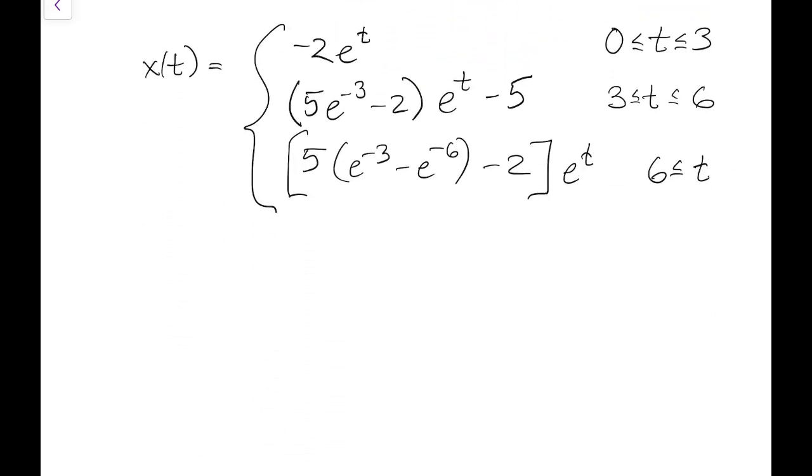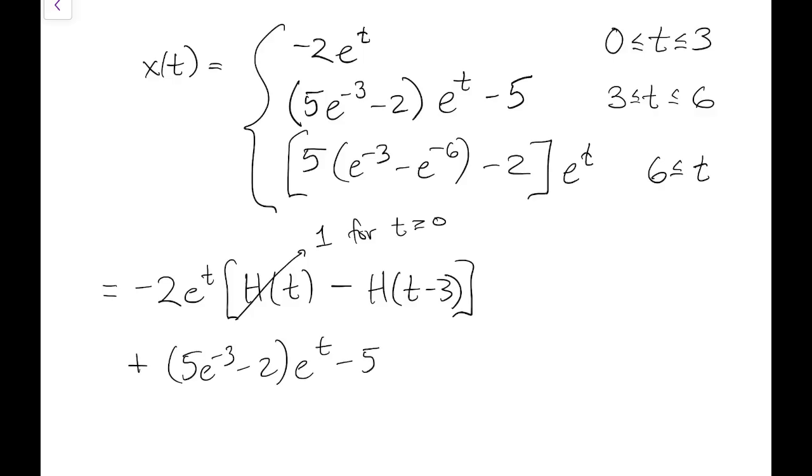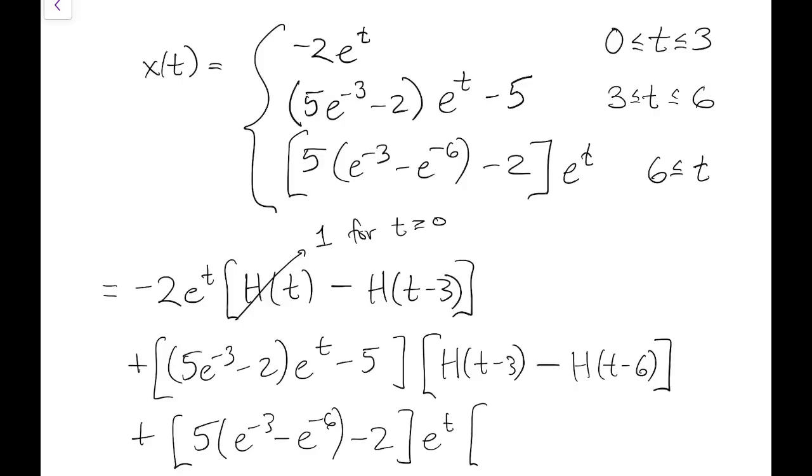We can also write the solution we found using these window functions. So the first piece is valid in the window from time 0 to 3. And of course, since all the times are greater than 0 anyway, we might as well just write 1 here for the Heaviside H of t. And then the second function definition is valid over the second window from time 3 to 6. And the last function definition is valid over all times greater than 6. You can think of that as a window, but it's really just the switch. It's just turning on at time 6 and it never turns off.